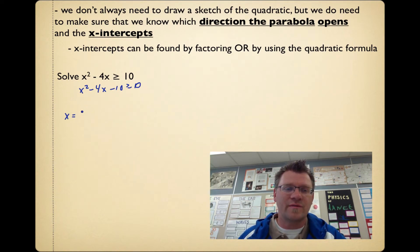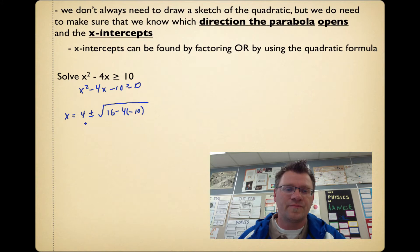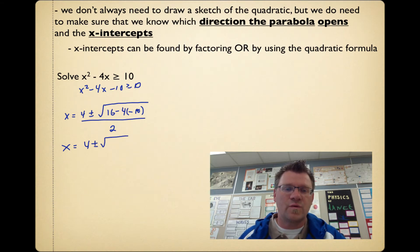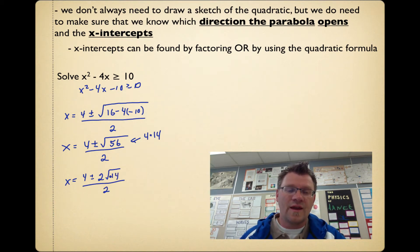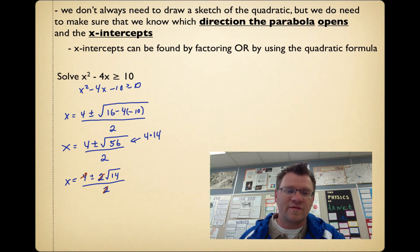Using the quadratic formula: negative b gives us 4, plus or minus the square root of b squared — negative 4 squared is 16 — minus 4 times a (which is 1) times c (which is negative 10), all divided by 2. That gives us 4 plus or minus the square root of 56, all divided by 2. Since 56 equals 4 times 14, we take the square root of 4 to get 2, leaving 14 under the root. Simplifying by dividing everything by 2 gives us x equals 2 plus or minus root 14.